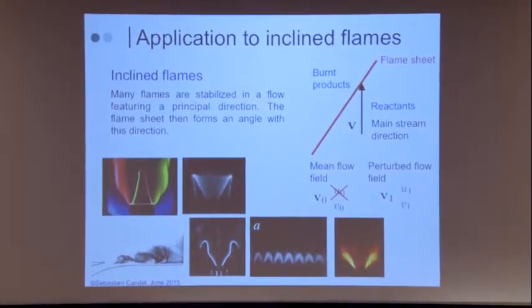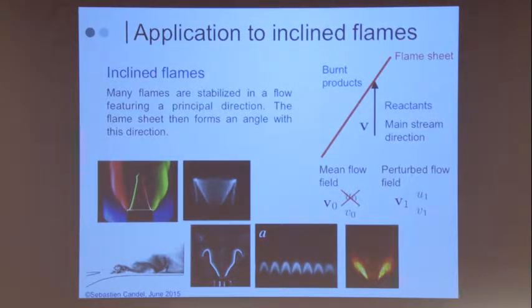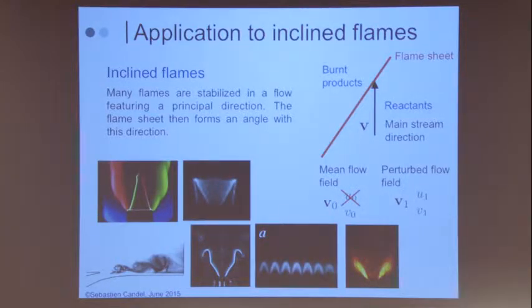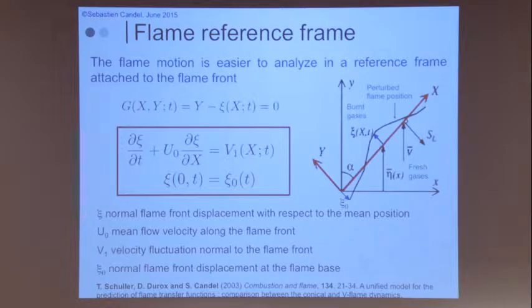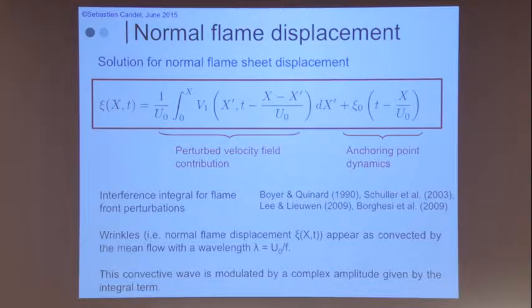A number of flames have been studied around the year 2000 and a little more: conical flames, M flames, V flames, multiple flames, and tomorrow we will look at swirling flames. One way to actually do that was done in a paper called the unified model for the prediction of flame transfer functions, which uses the G equation in a frame of reference going along the flame itself. The perturbation of the flame is given by one part due to the anchoring point dynamics, and another part due to the velocity contributions.